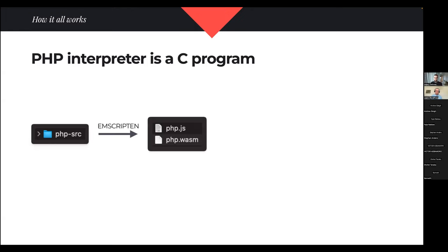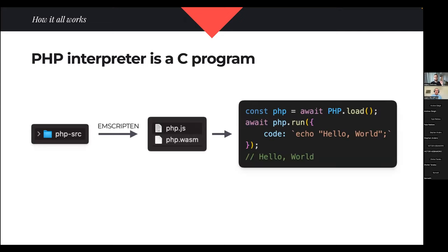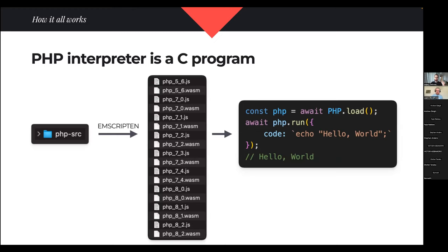PHP interpreter is a C program, which means I can take the source code of the PHP programming language and compile it to WebAssembly executable files. Then I can execute them in the browser, which means I can run PHP code. PHP has more than one version and every version has its own separate set of executable files — which means the version switcher I showed before is actually quite simple: it just tells the browser to download a different PHP file, like php_eight_zero instead of php_seven_four.